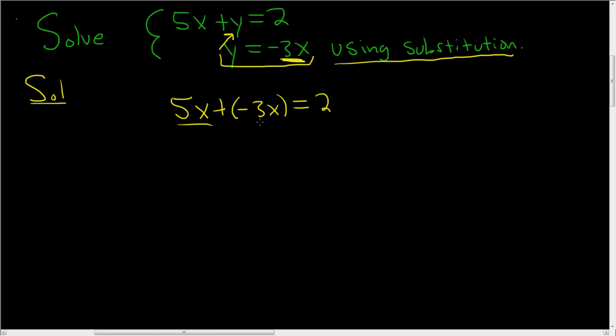So 5x minus 3x is just 2x, and that's equal to 2. So divide by 2, and you get x equals 1.